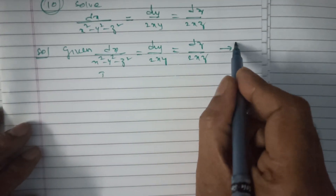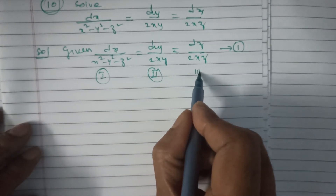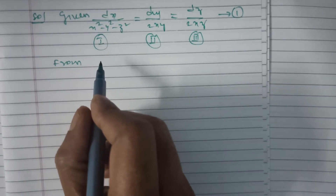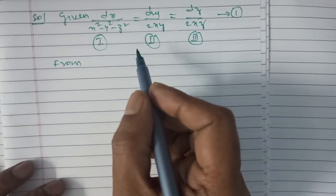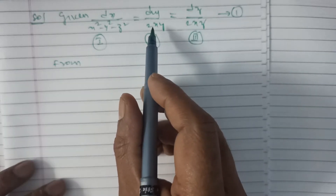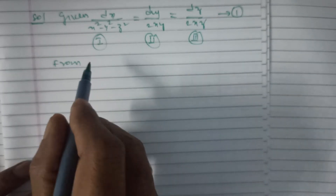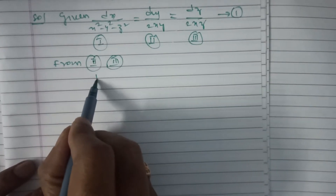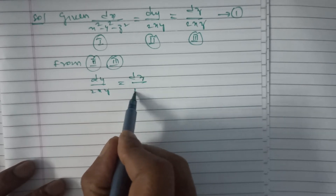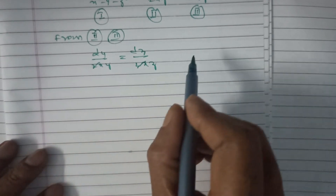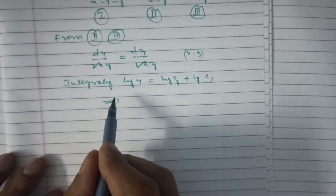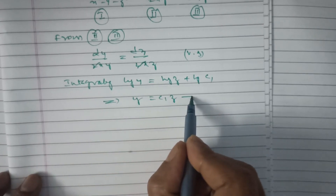This is Equation 1. The first ratio is Roman I, the second is Roman II, and the third is Roman III. Here we observe that the grouping method is possible. Taking Roman II and Roman III: dy/(2xy) = dz/(2xz), so 2x cancels in the denominator, leaving the variable separable form. Integrating: log y = log z + log c₁, which implies y = c₁z. Take this as Equation 2.